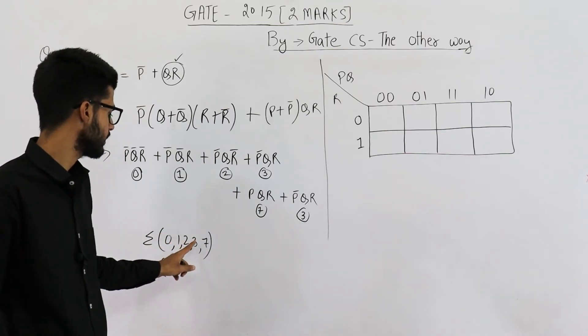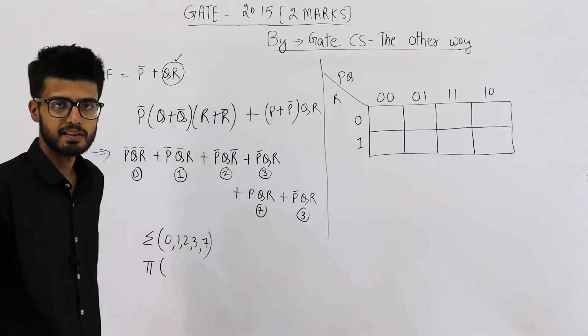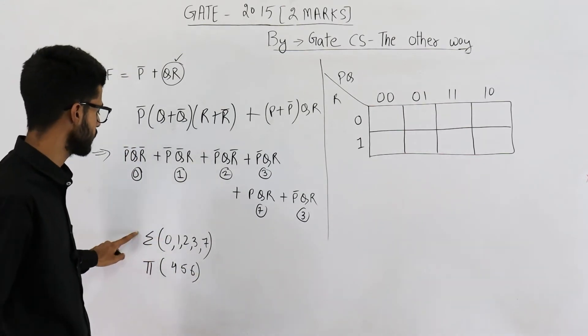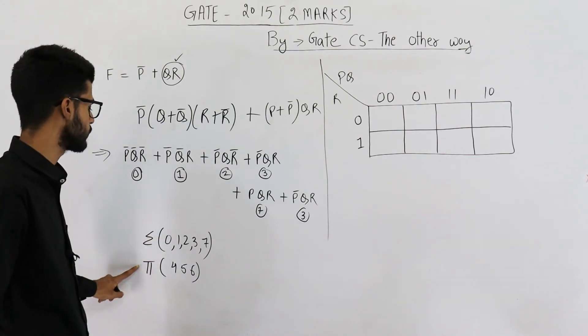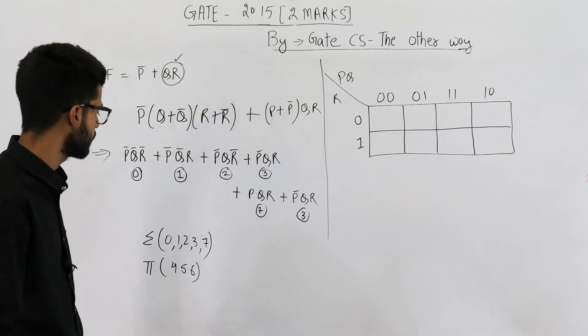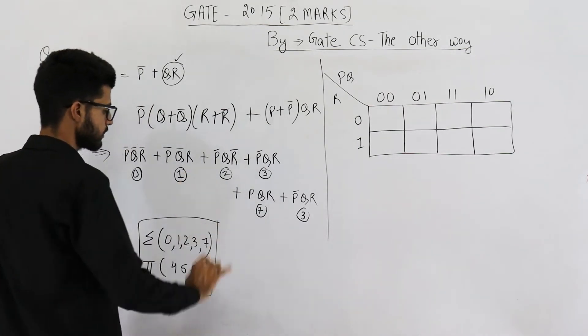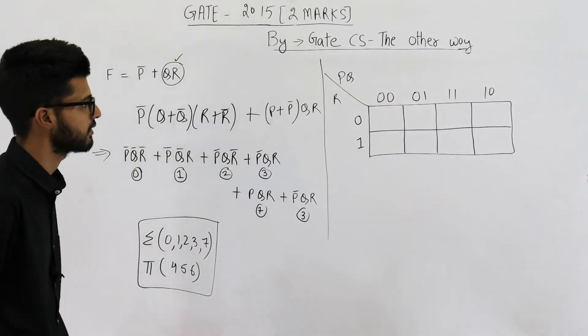So you can see 0, 1, 2, 3 are covered here, 4, 5 and 6 are left. So this is Π(4, 5, 6). So function outputs 1 on these inputs and outputs 0 on these inputs. So you can see these two statements from the options are correct. You can just match the options.